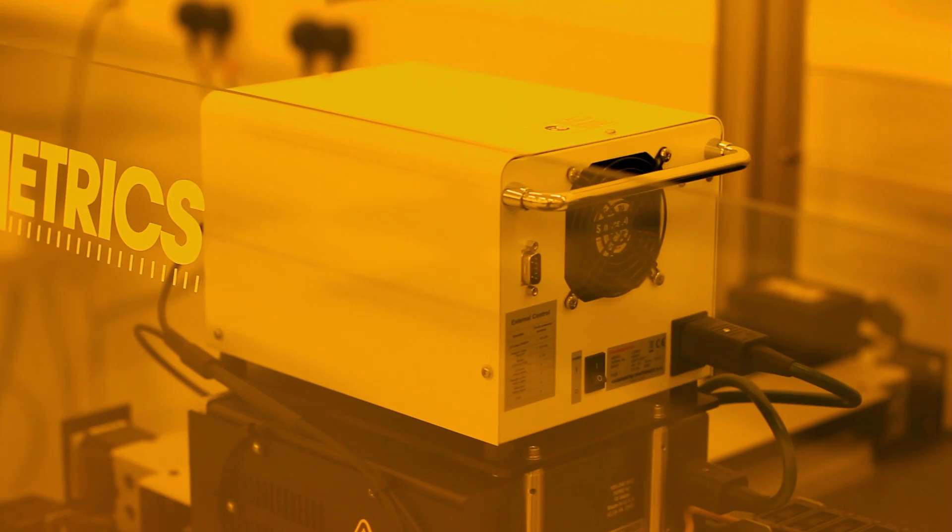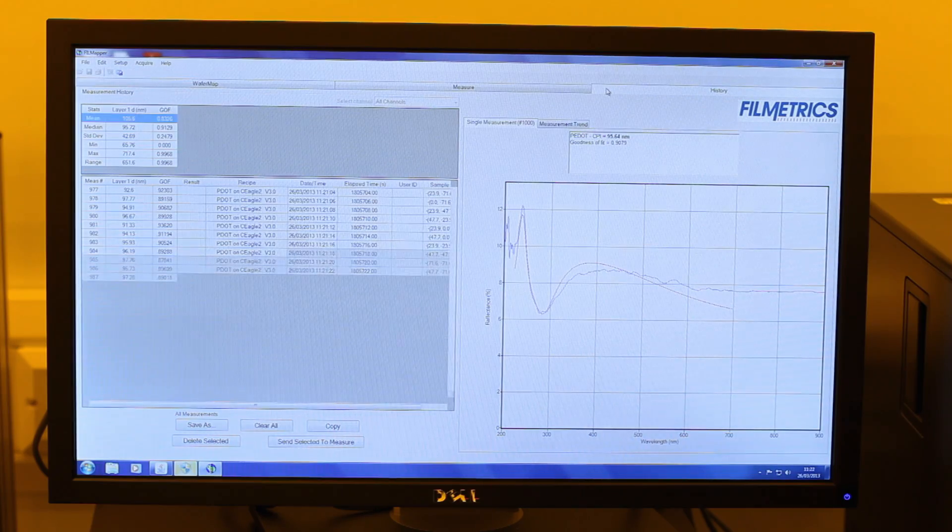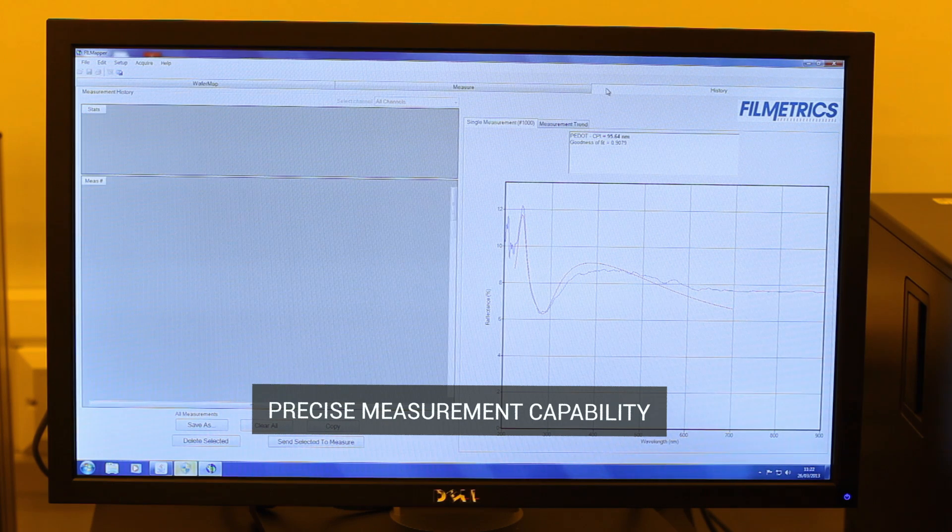Automated thin-film metrology is utilised to measure precise film thickness and uniformity, enabling the user to quickly characterise and optimise the coating process.